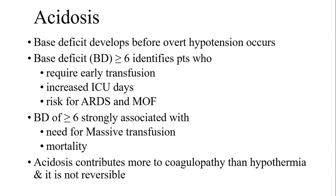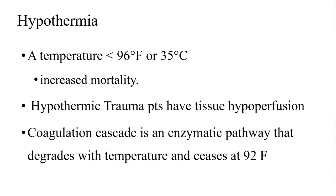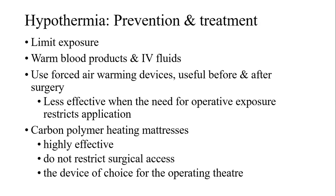If the base deficit is more than 6, patients are likely to require massive transfusion, have increased length of stay, increased mortality, and increased risk of ARDS and multi-organ failure. Acidosis contributes significantly to coagulopathy. Hypothermia is particularly dangerous and not easily reversible — if the patient becomes hypothermic, mortality is higher because the coagulation cascade stops working below 32°C. That is also the fallacy with conventional coagulation tests, which are run at 37°C even when the patient's temperature is 33–34°C. You need to prevent and treat hypothermia using warm blood products and IV fluids — use IV fluids with a pinch of salt.